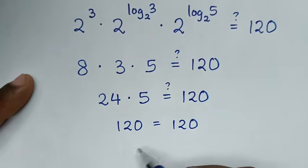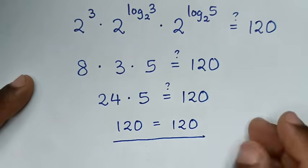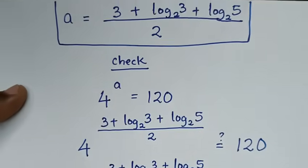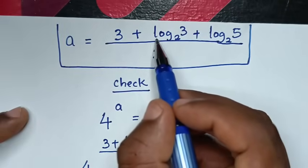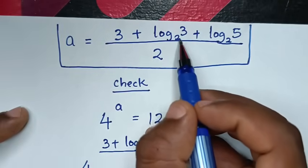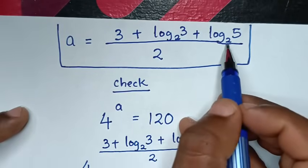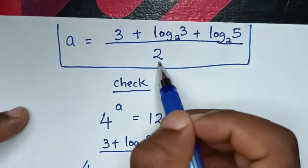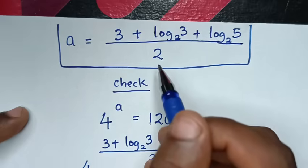The left side and right side are equal, so it is confirmed true. The value of a is (3 + log base 2 of 3 + log base 2 of 5) over 2, which is the simplified form.